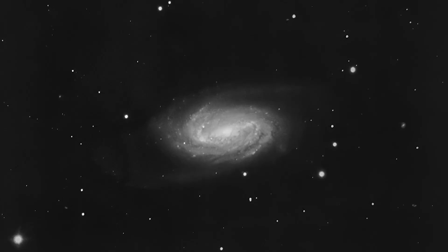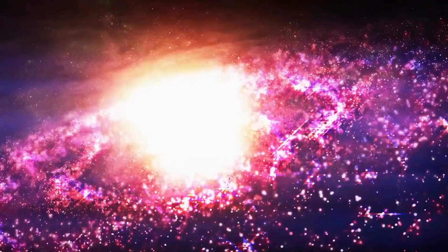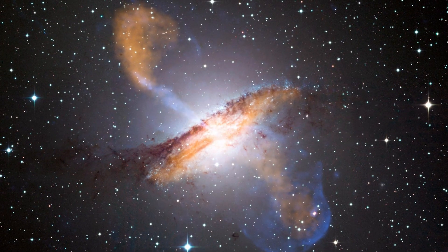Radio galaxies house supermassive black holes at their cores. As matter falls into the black hole, it releases energy in the form of two radio jets from opposite sides of the galaxy's center, also known as an active galactic nucleus.